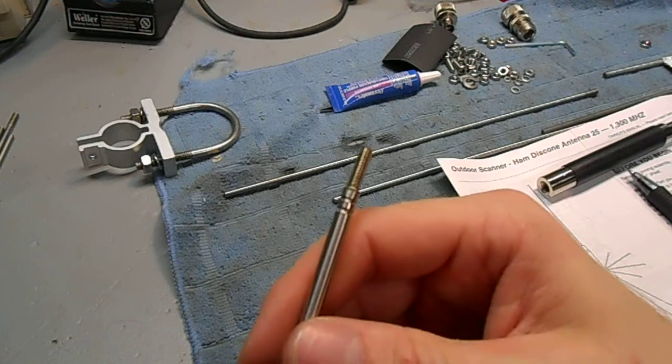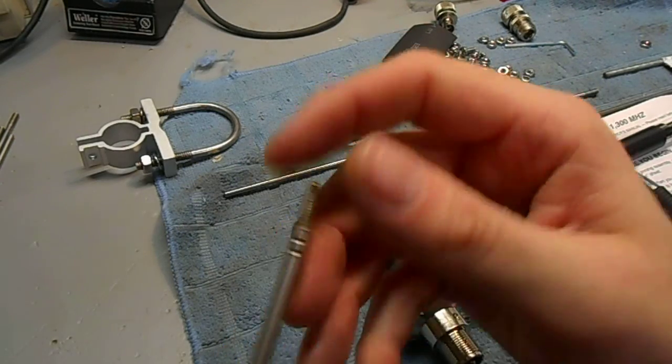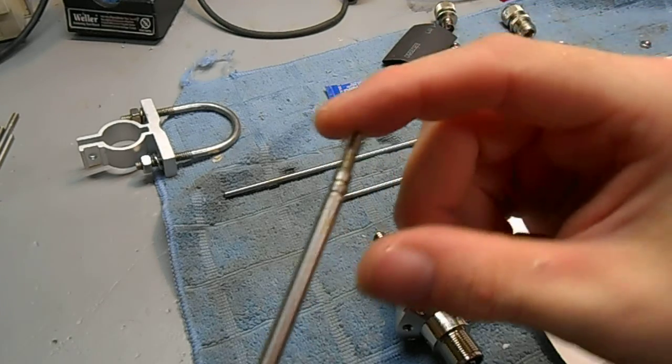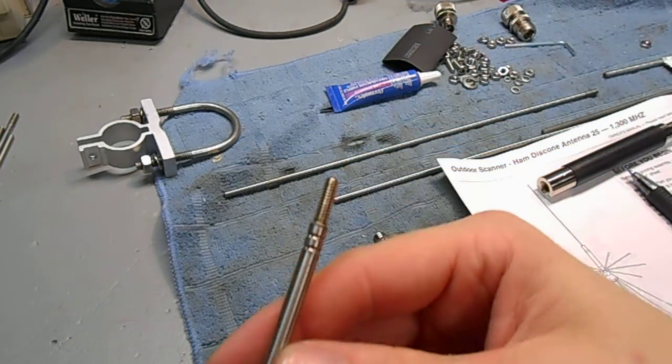What happens is, as the antenna is flopping around in the wind, like that, they'll eventually break off an element or so. I had it happen a couple times.